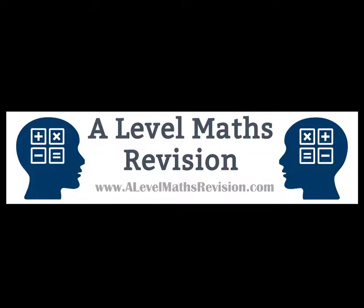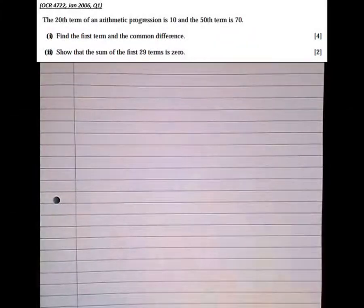In this tutorial, we're going to be having a look at sequences, in particular arithmetic sequences. So looking at this question here, it says the 20th term of an arithmetic progression is 10 and the 50th term is 70.